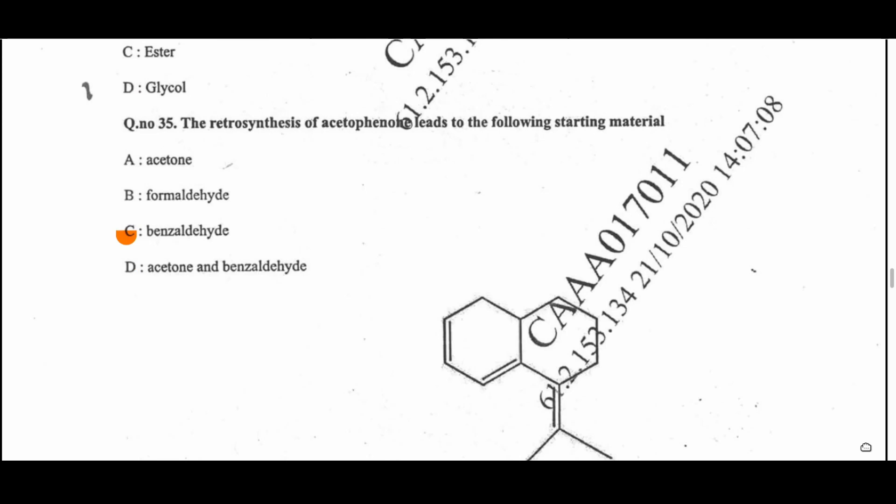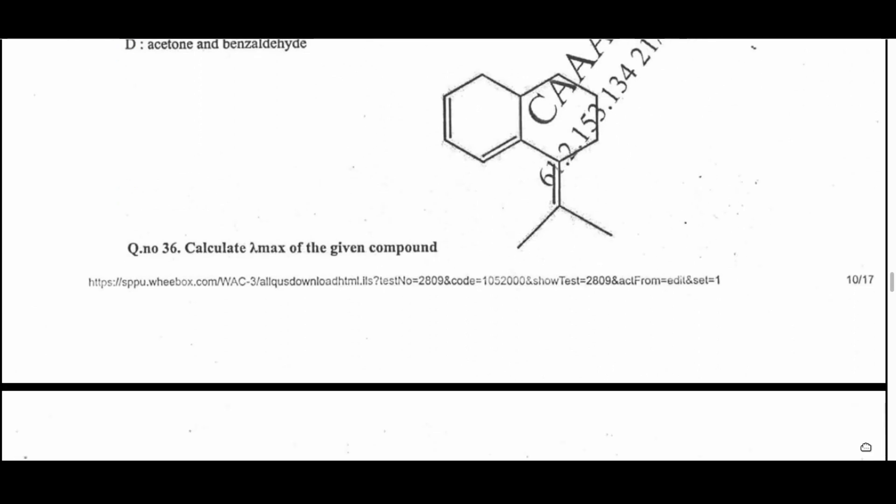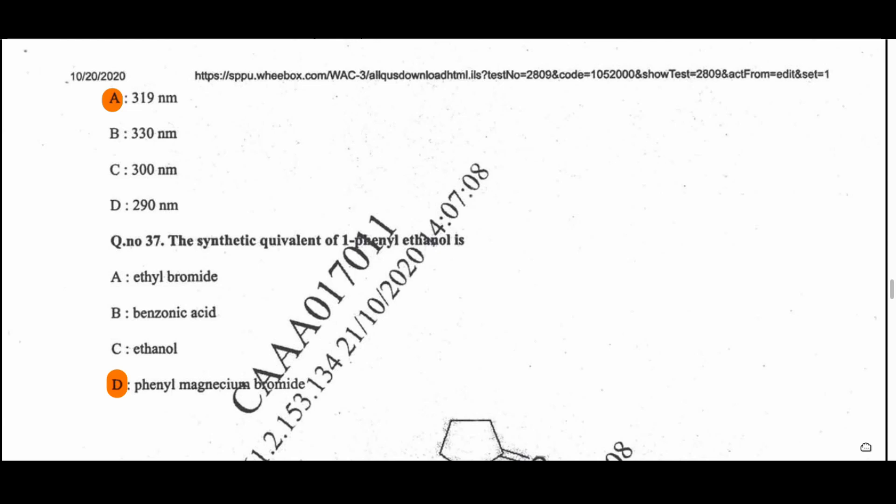Question 35: The retrosynthesis of acetophenone leads to benzaldehyde as the starting material — option C. Question 36: After calculation of lambda max for the given compound, the answer is option A: 319 nanometers. Question 37: The synthetic equivalent of 1-phenylethanol is option D — phenyl magnesium bromide.